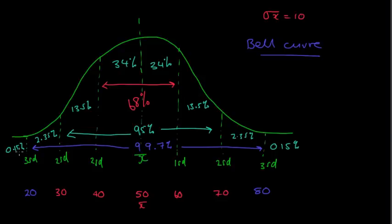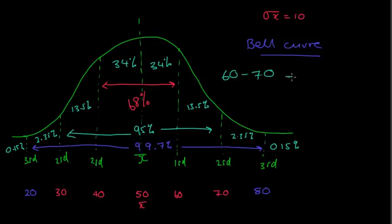It's really important, but you might ask why. Well, you could get questions that say something like: what percentage of people would score between 60 and 70 in this test? Well, between 60 and 70 would be between the first standard deviation and the second standard deviation — so I would say 13.5% of people scored between 60 and 70.